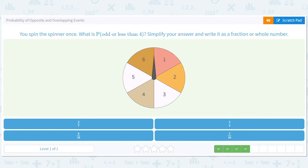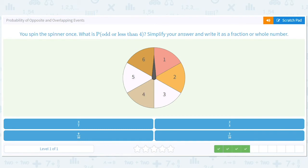You spin the spinner once. What is the probability of getting an odd or less than four? Okay. All you have to do is put, when you have or, you just put all the possibilities together, right? So let's circle less than four. Less than four is three, two, or one.